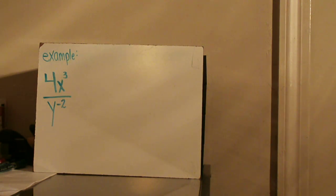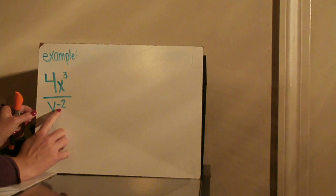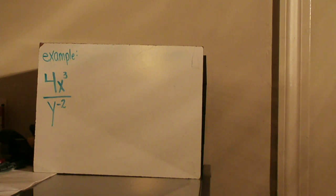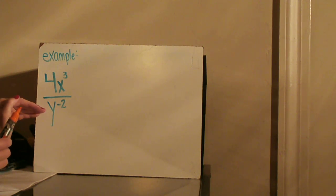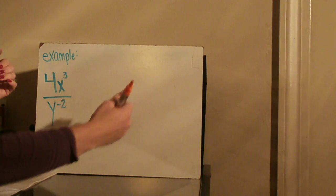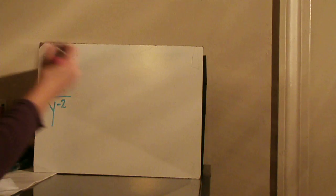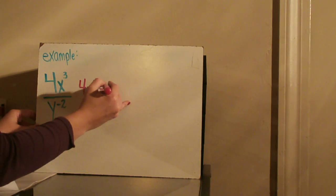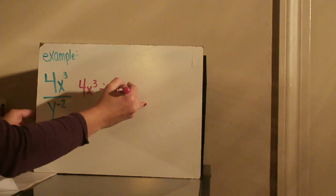Our first example is 4x cubed divided by y to the negative 2. Because I have this base to the negative exponent, I know I'm going to have to use the rule where I say 1 over y squared. Since y to the negative 2 is currently in the denominator of a fraction, I'm going to rewrite this horizontally so I can get a better view: 4x to the third divided by y to the negative 2.